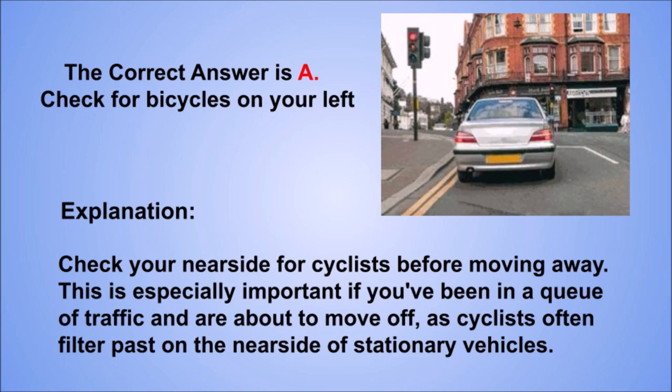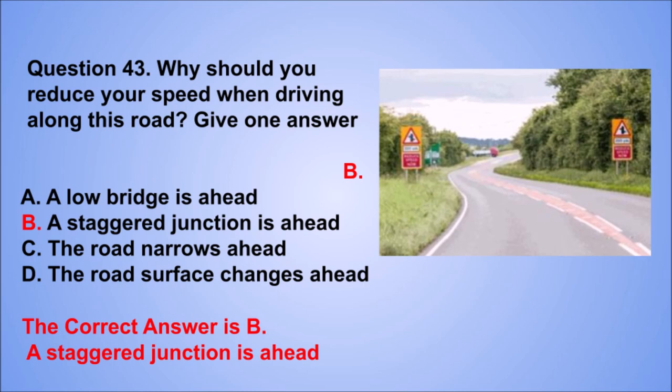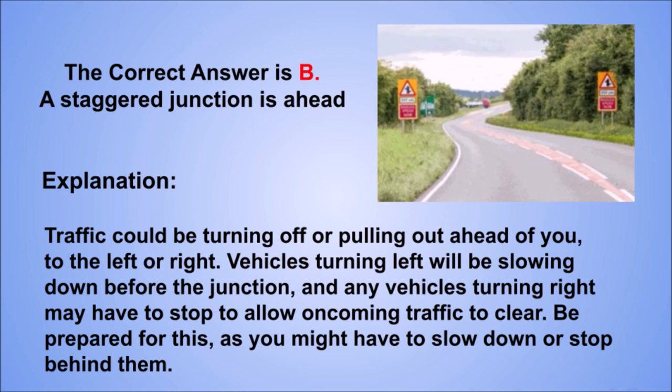Question 43. Why should you reduce your speed when driving along this road? Give one answer. A. A low bridge is ahead. B. A staggered junction is ahead. C. The road narrows ahead. D. The road surface change is ahead. The correct answer is B, a staggered junction is ahead. Traffic could be turning off or pulling out ahead of you, to the left or right. Vehicles turning left will be slowing down before the junction, and any vehicles turning right may have to stop to allow oncoming traffic to clear. Be prepared as you might have to slow down or stop behind them.